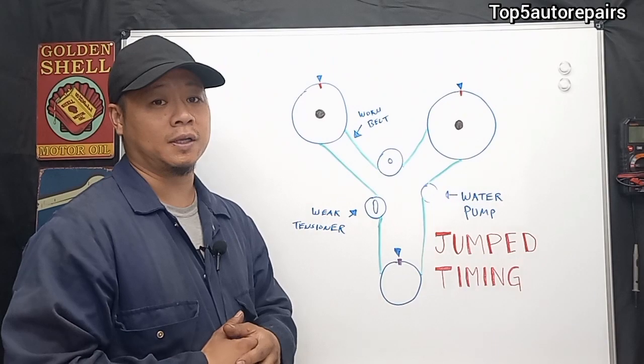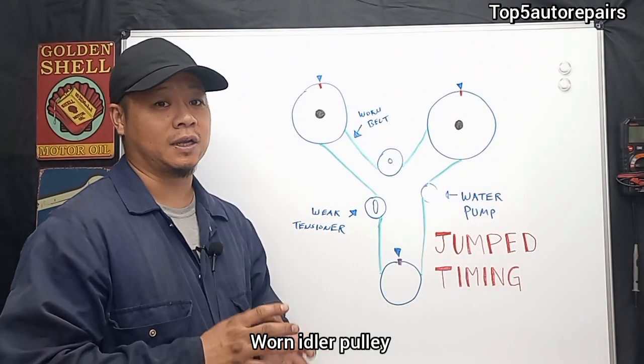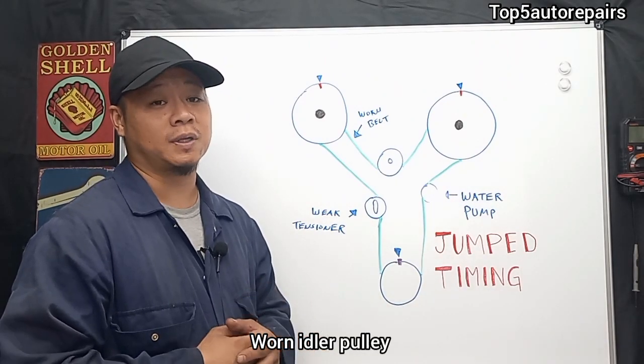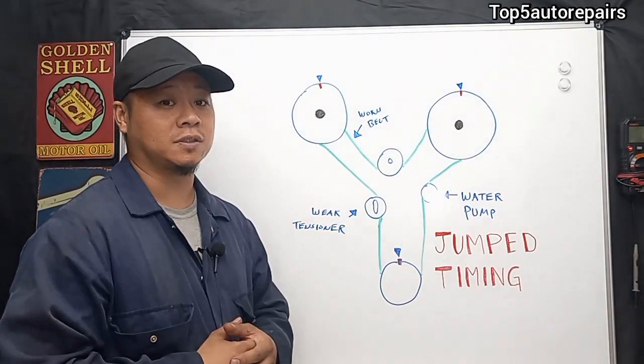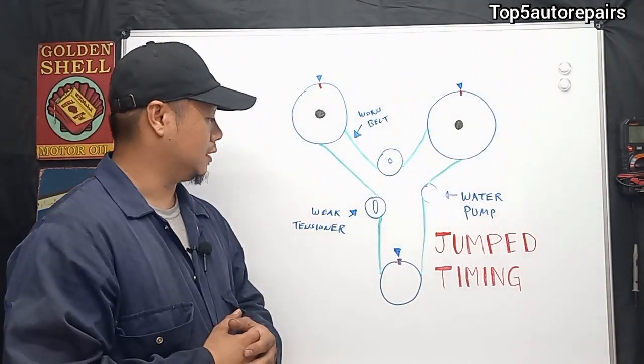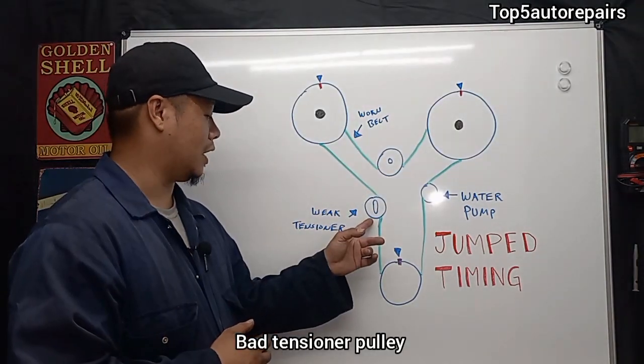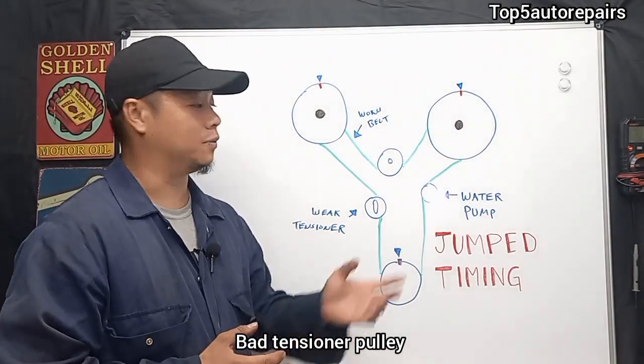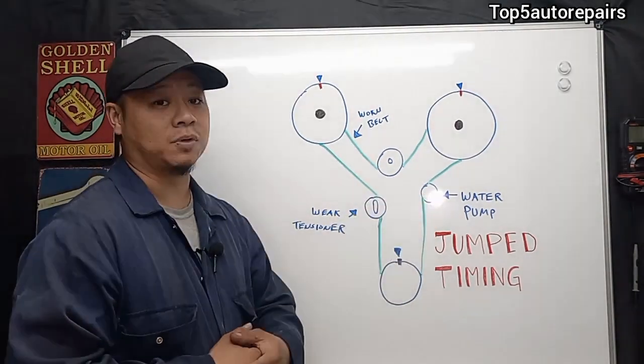Or the outer pulley can be worn and it can create a lot of movement as well and cause the belt or chain to come out of place. And you can also have a weak tensioner pulley that can also behave the same way as all these pulleys.